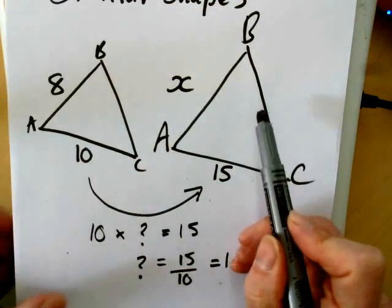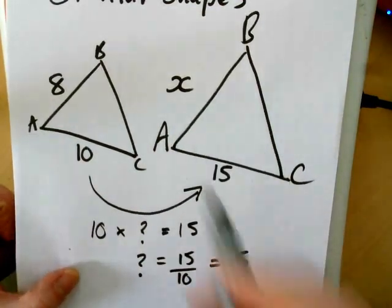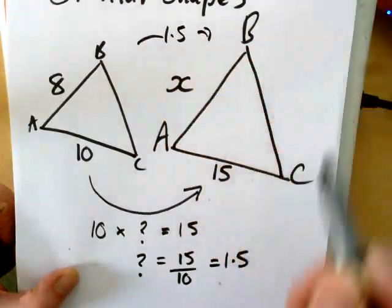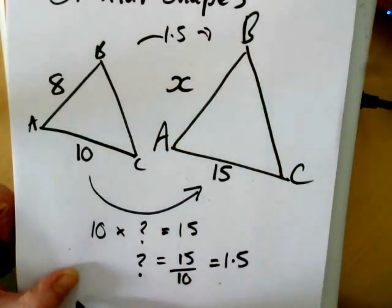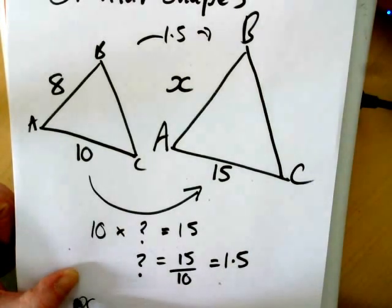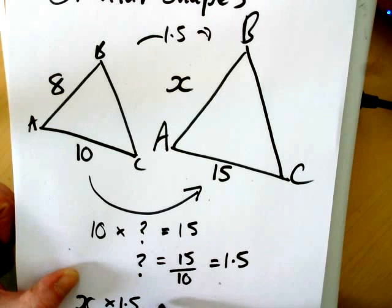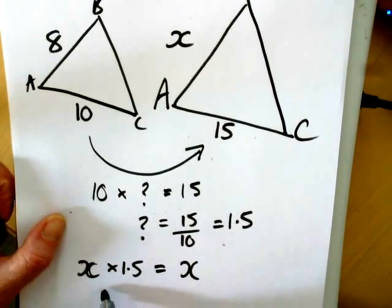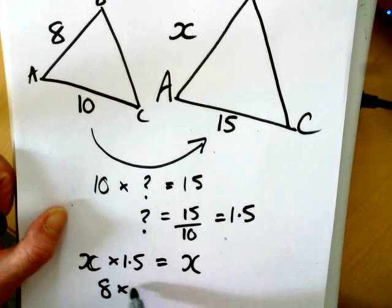So the larger of the two triangles is 1.5 times bigger than the smaller of the two triangles. If we want to find side X, we know that X times 1.5 will give us the new side length. So 8 times 1.5.